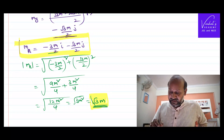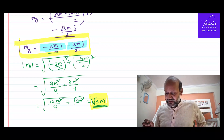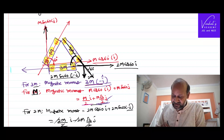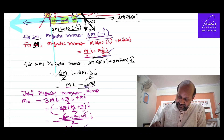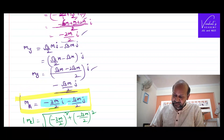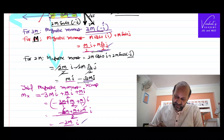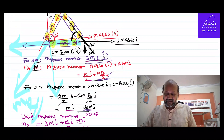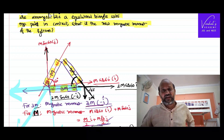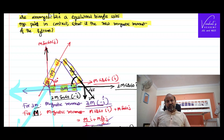Are you interested in finding its direction? Look carefully — this is minus î and minus ĵ, so in the diagram, your resultant lies somewhere in the third quadrant, having both negative x and y components. That's how we solve the problem. It looks lengthy and complicated but it's very simple — we just resolve the magnetic moment into components, recognizing that magnetic moment is a vector quantity. Thank you for watching.